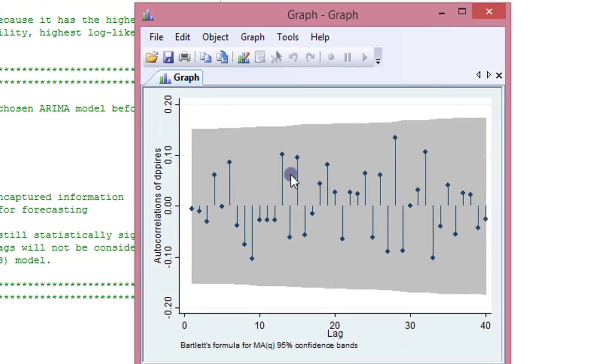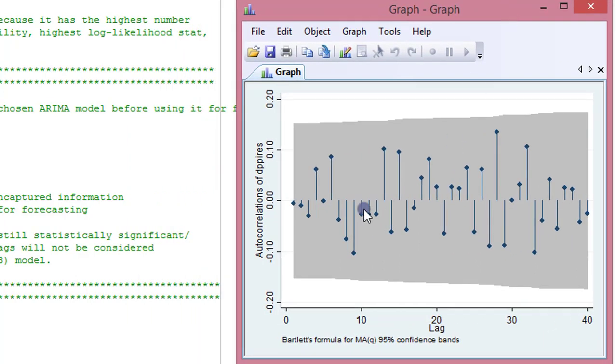So here we have the correlogram of the residuals. From what we can see, it is flat. What do I mean by flat? All the lags are within the 95% confidence interval, indicating that there are no uncaptured information. So we can say that yes, ARIMA 3,1,3 is the appropriate model for forecasting.